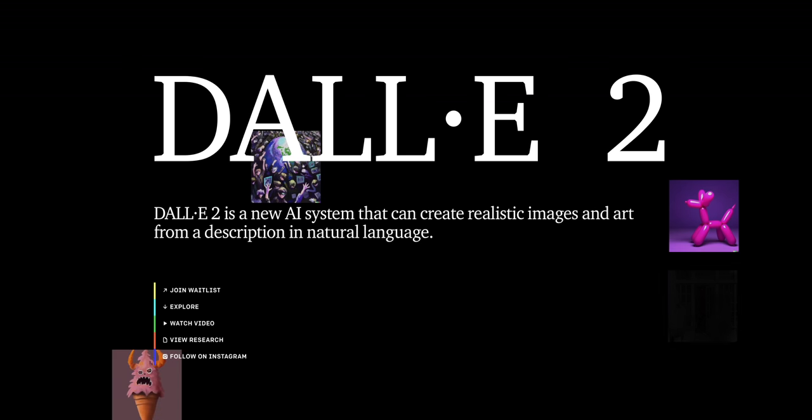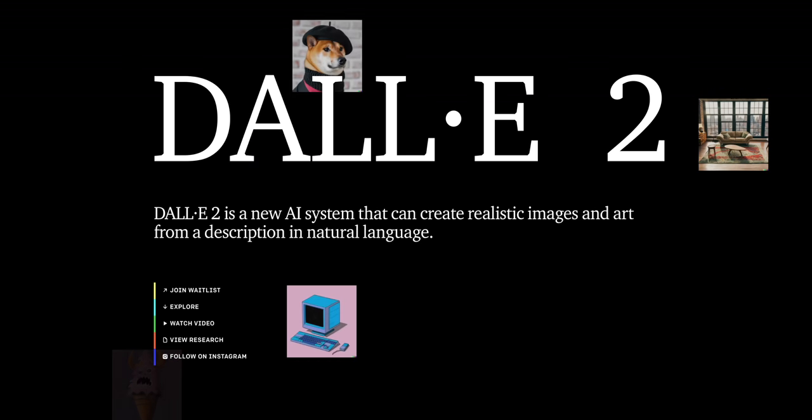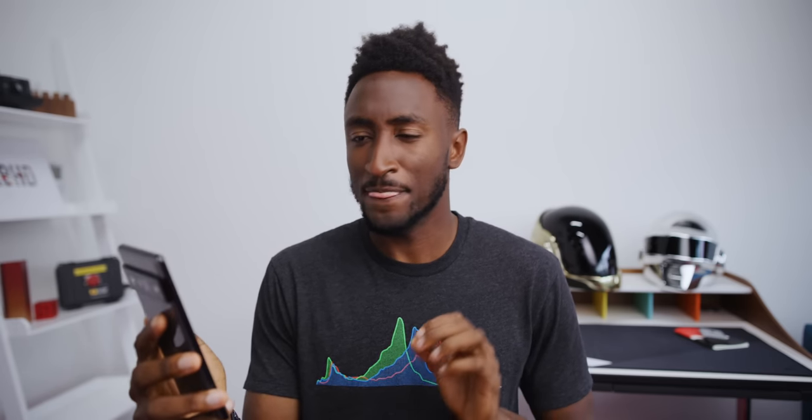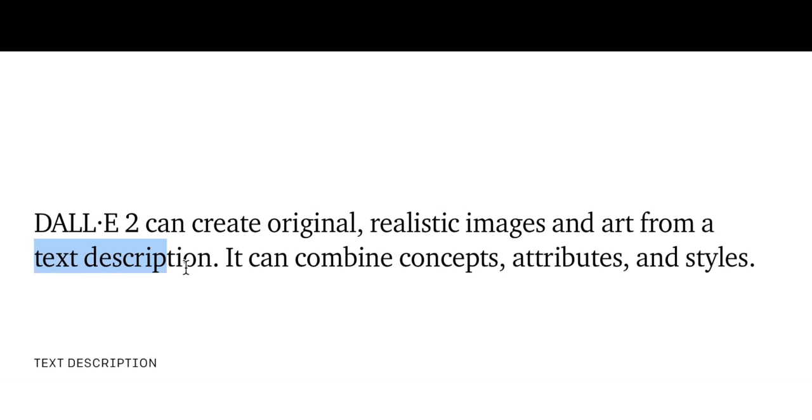First things first — yes, this does exist. This is a real thing. It's called DALL-E 2, and it's an AI research project by a company called OpenAI, one of many Elon Musk co-founded companies at this point. The purpose of this AI specifically is to create original, realistic images and art from a text description. This is Aditya Ramesh, a researcher and co-creator of DALL-E 1 and DALL-E 2, and he's easily the most qualified person to explain what's happening here.